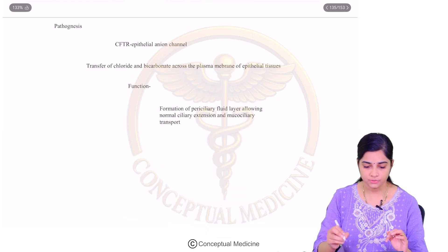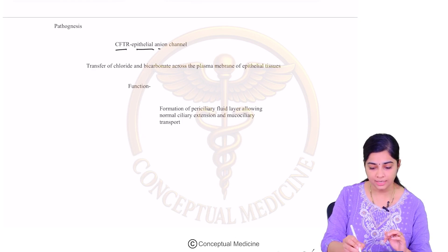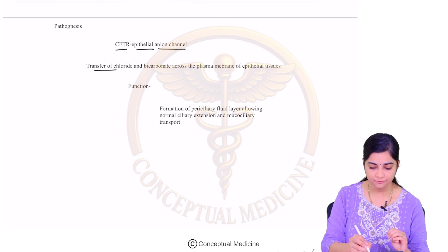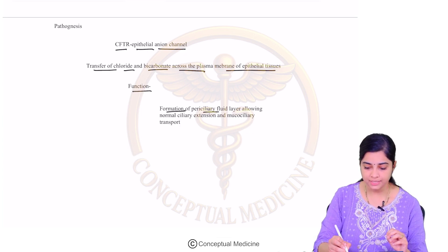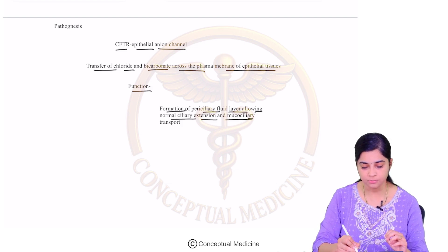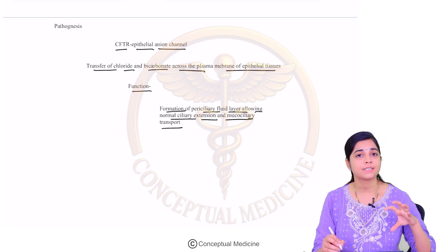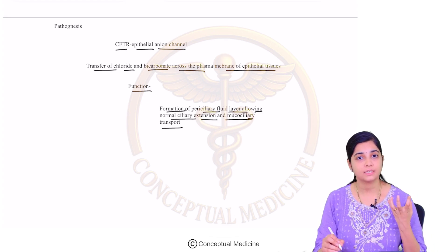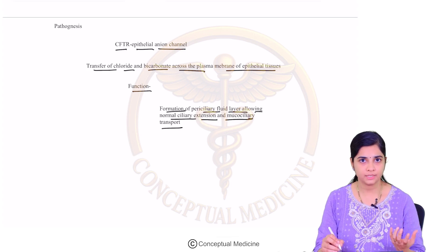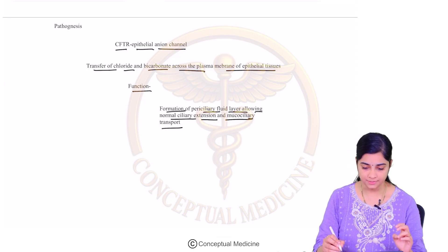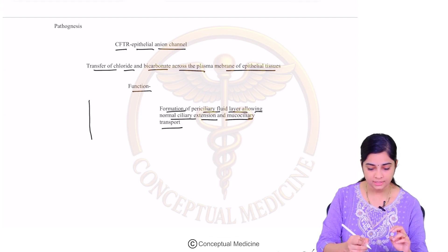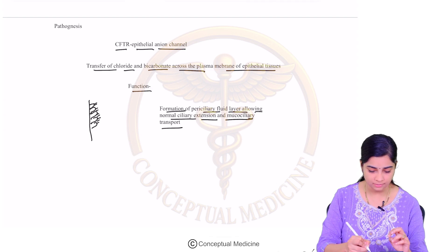So let us understand the pathogenesis. CFTR is basically responsible for the epithelial anion channel. It helps in the transfer of chloride and bicarbonate across the plasma membrane of the epithelial tissues. The major function is the formation of the periciliary fluid, allowing normal ciliary extension and mucociliary transport. Within the bronchioles, it helps in the formation of the periciliary fluid.